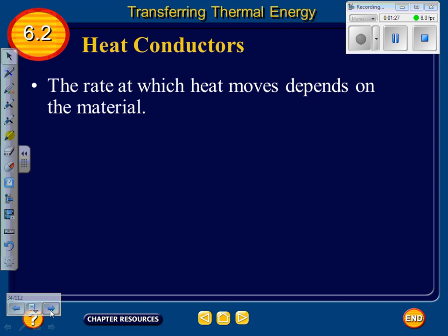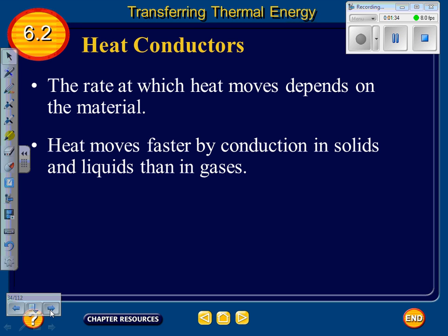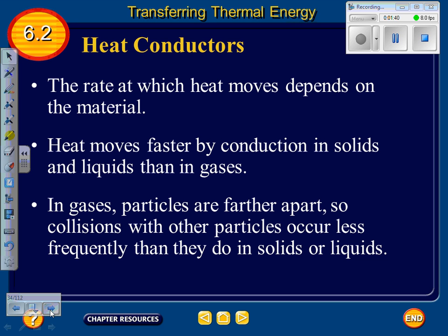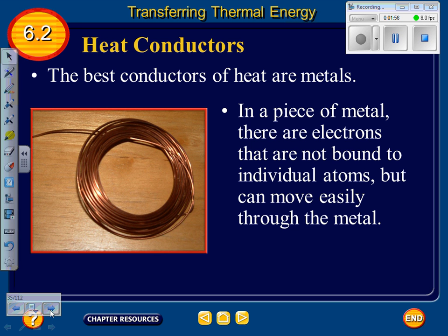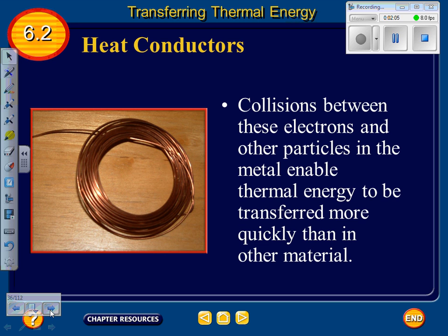Heat conductors: the rate at which heat moves depends on the material. Heat moves faster by conduction in solids and liquids than in gases, because in gases particles are farther apart and collisions occur less frequently. The best conductors of heat are metals. In a piece of metal, there are electrons not bound to individual atoms that can move easily through the metal. Collisions between these electrons and other particles enable thermal energy to be transferred more quickly than in other materials.